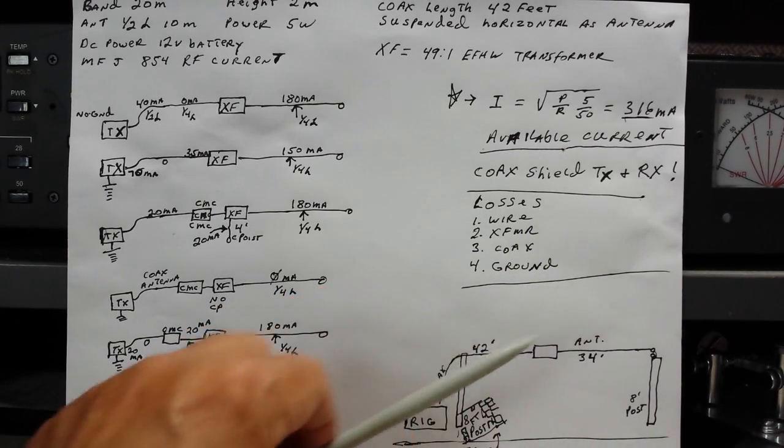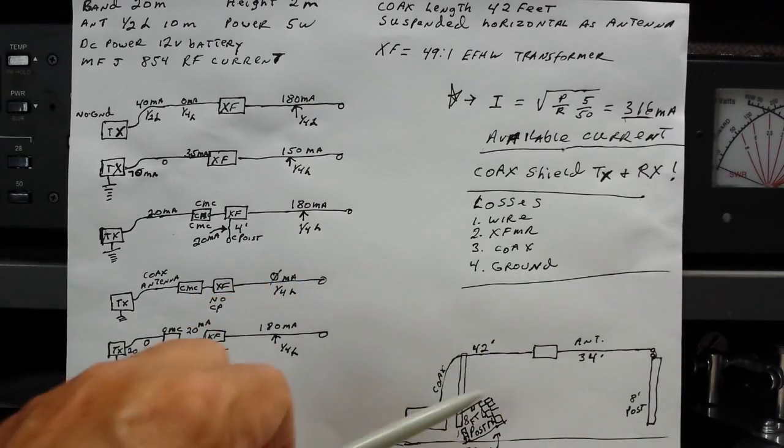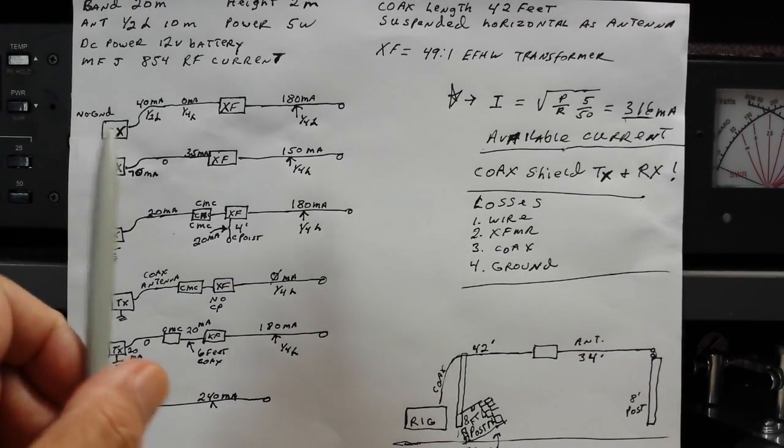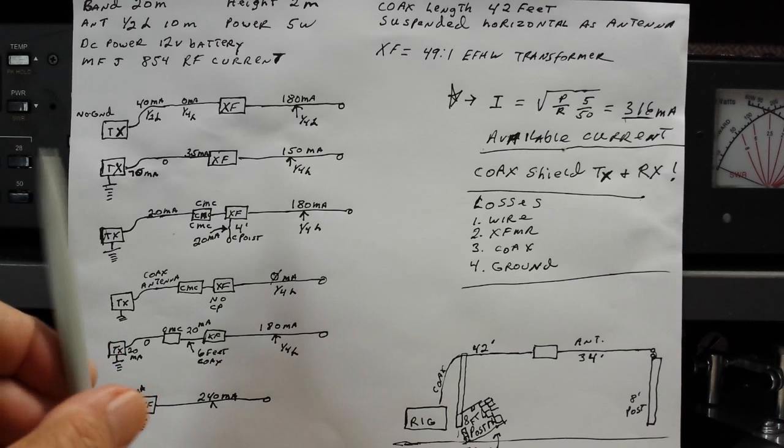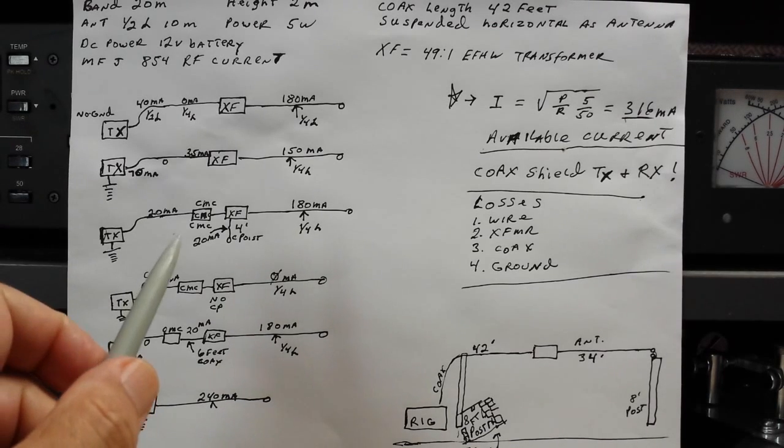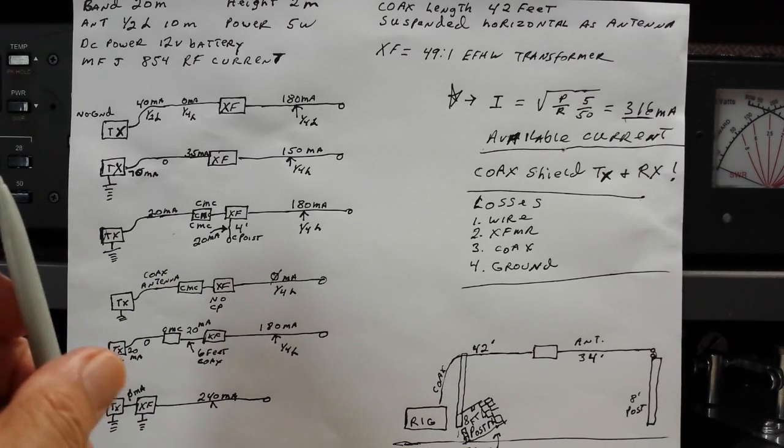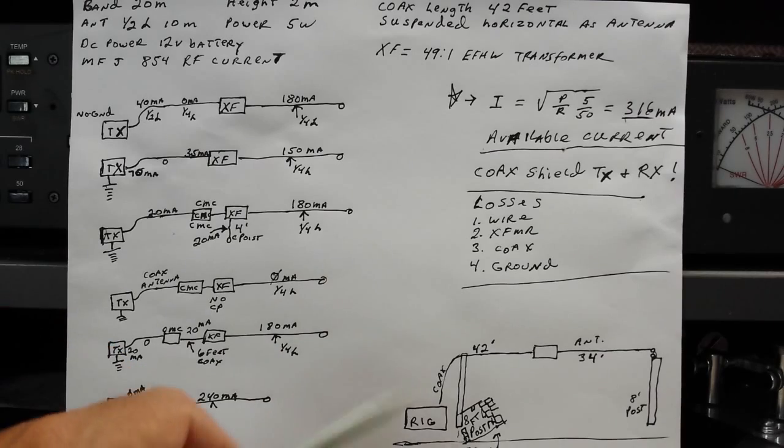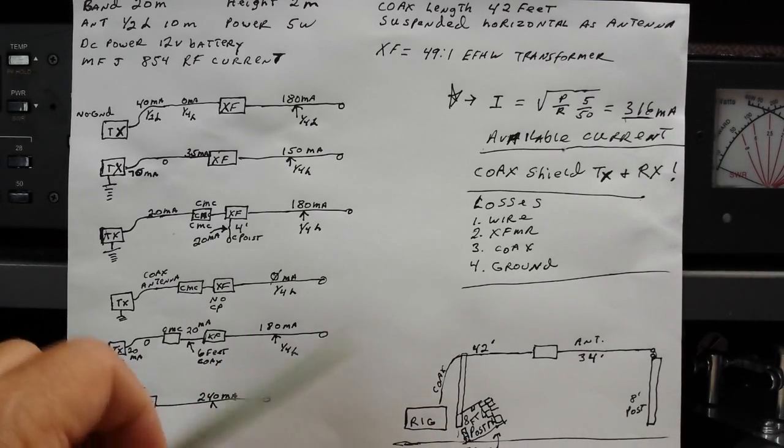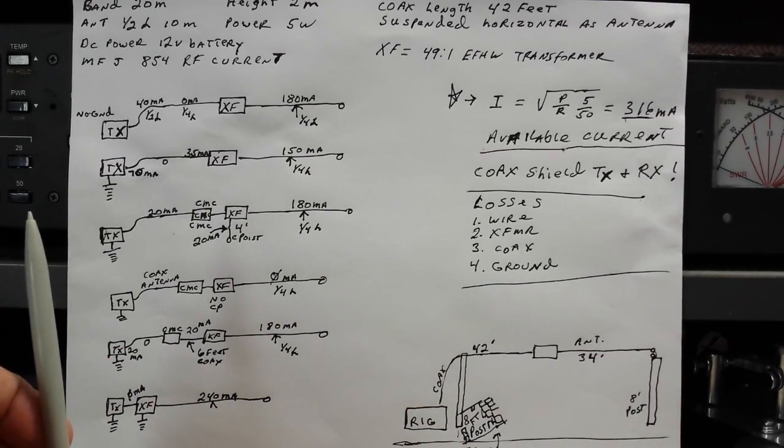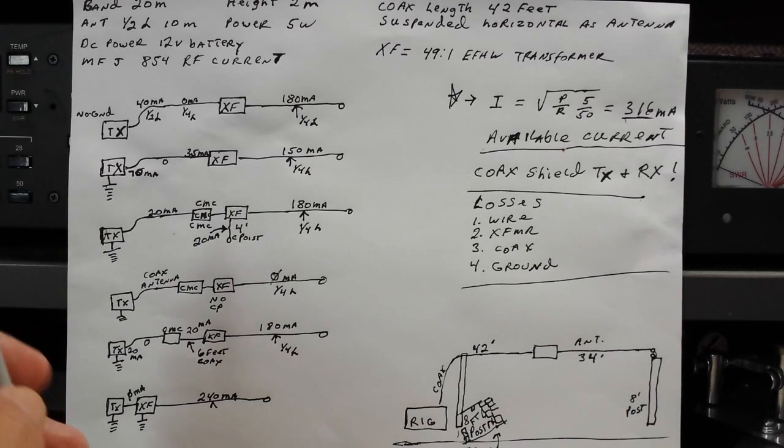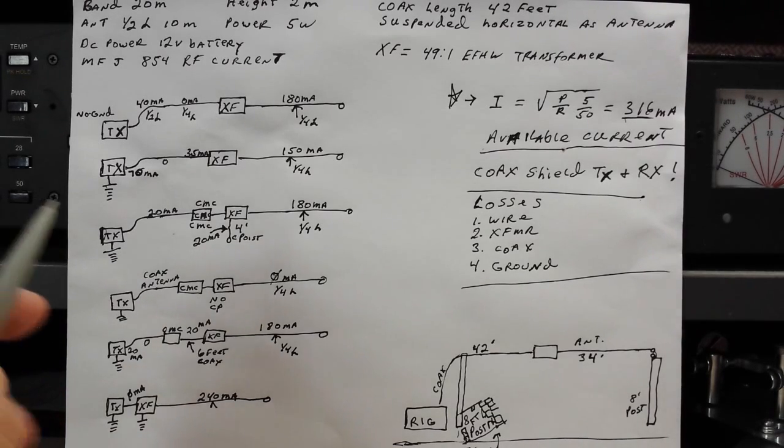But, with these antennas, it seems to be best to keep the transformer down close to the ground and directly grounded. And, when I did that, the coax feeding the transformer ceased to be part of the antenna system and no longer picks up noise and so forth.